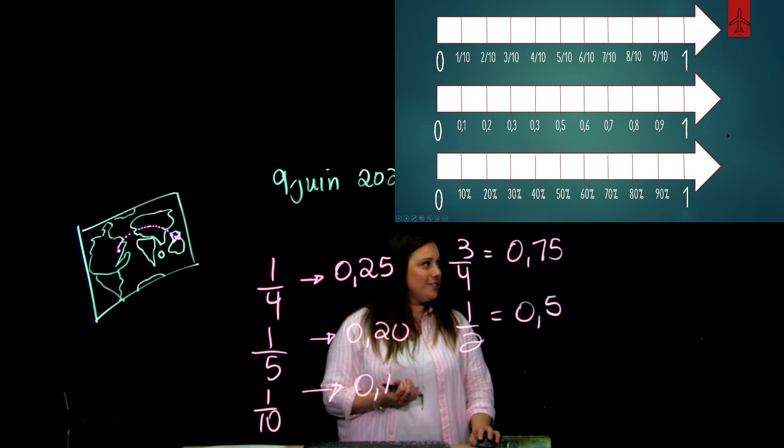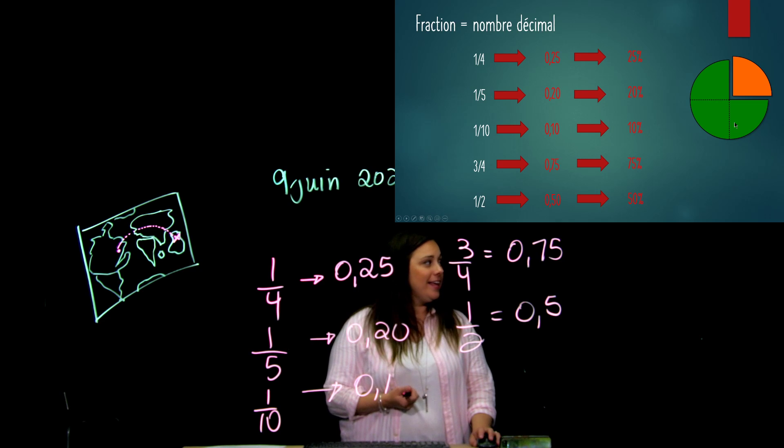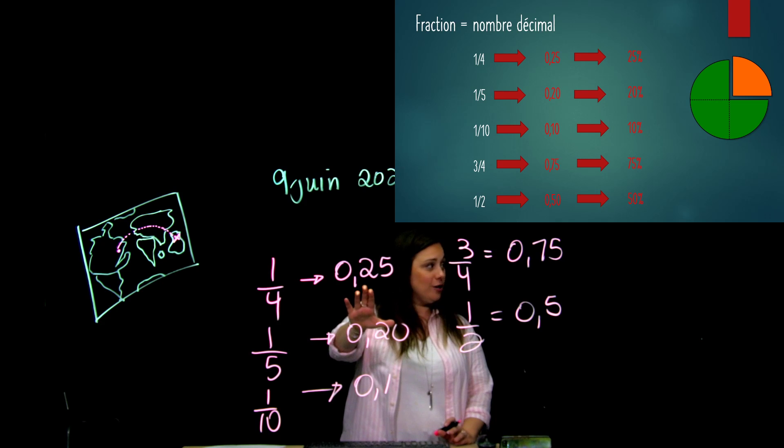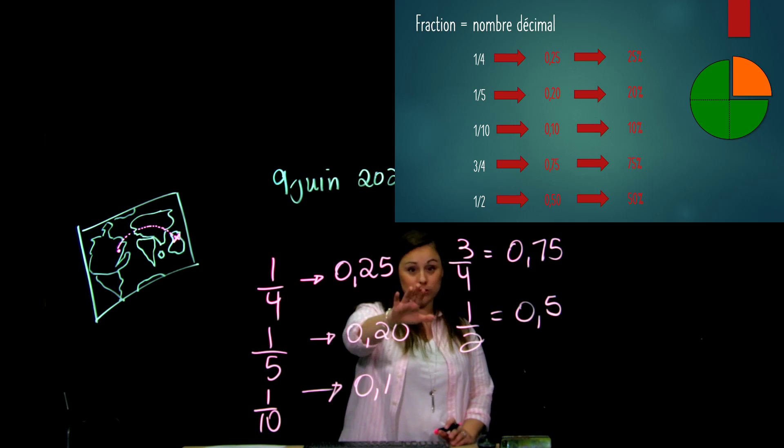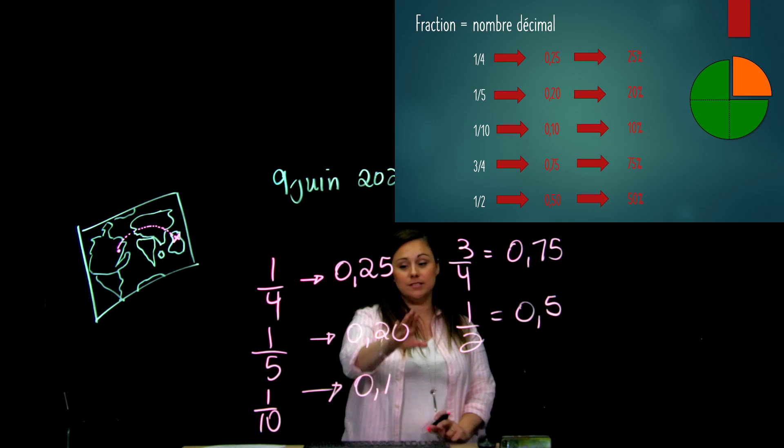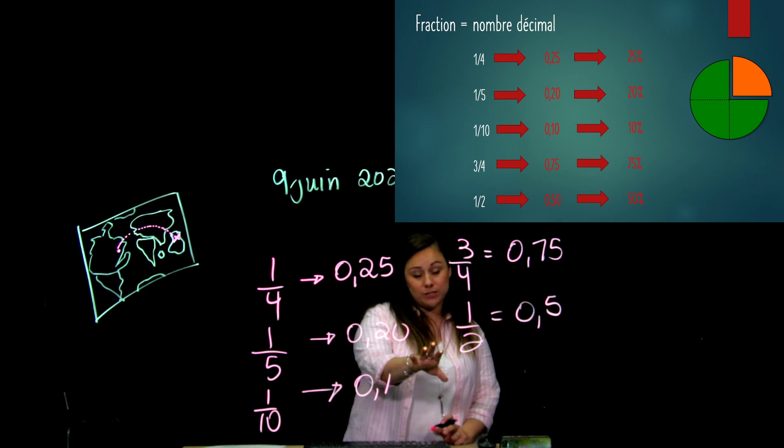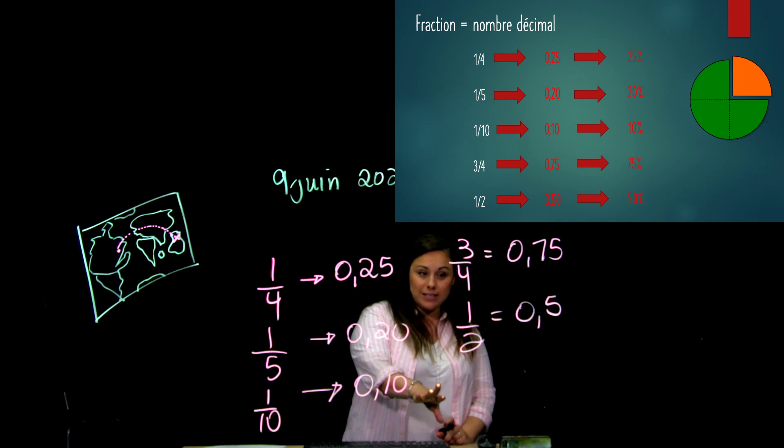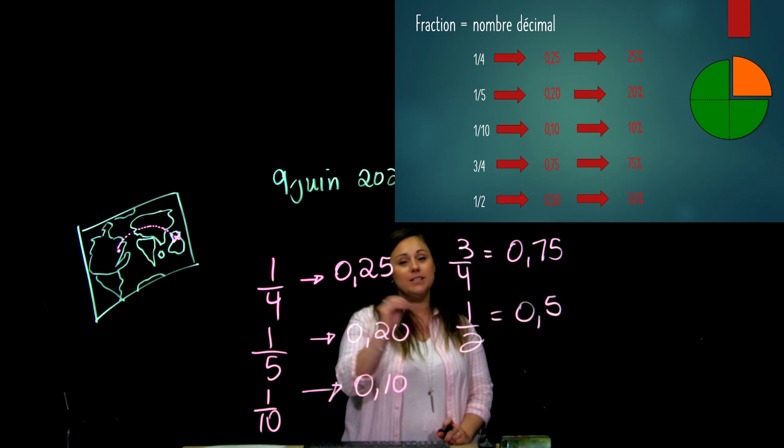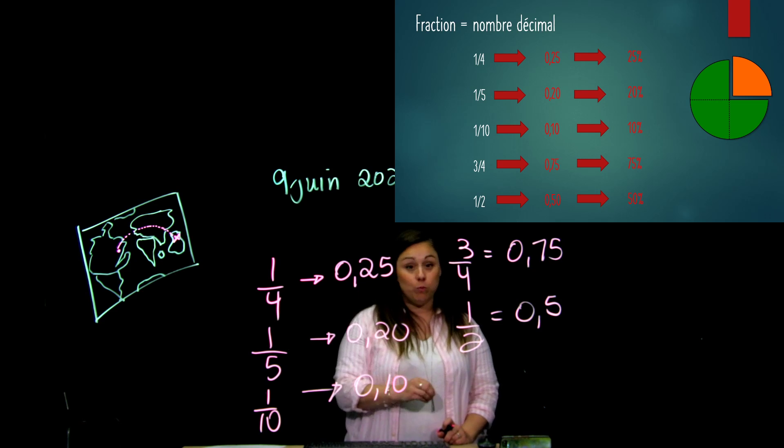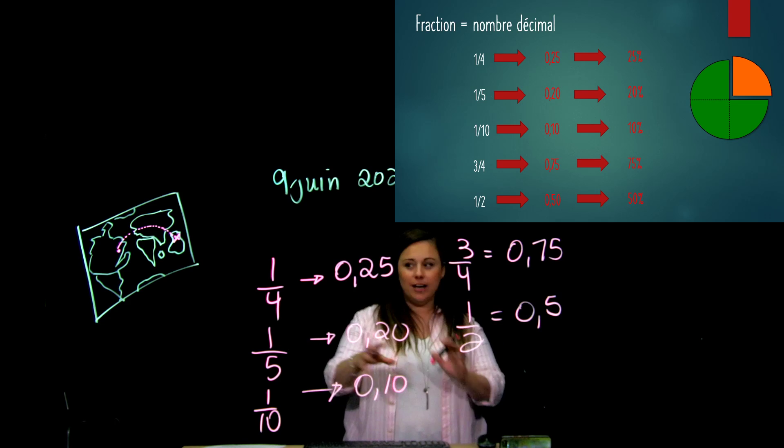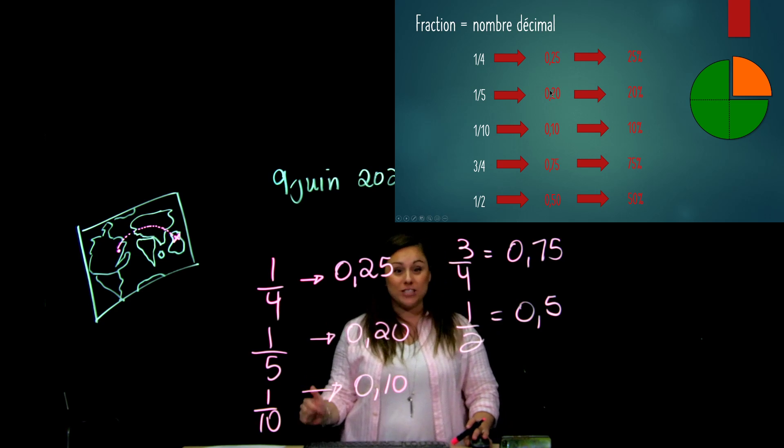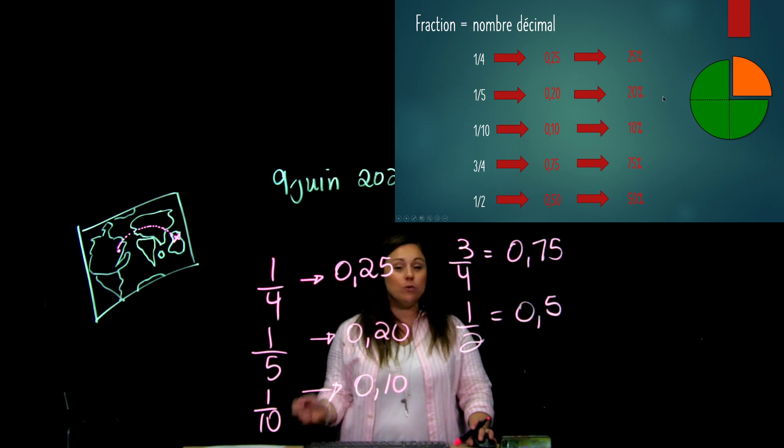Alors, si je reviens à ceci, je peux donc affirmer que 0,25, comme j'avais tout à l'heure, c'est 25%. Et tu les as les réponses ici. 20 centièmes, c'est 20%. 10 centièmes, c'est 10%. Alors, c'est assez facile de passer du nombre décimal au pourcentage. C'est peut-être le contraire, quand ce n'est pas nécessairement des nombres sur 10 ou sur 100, où est-ce que c'est plus compliqué.